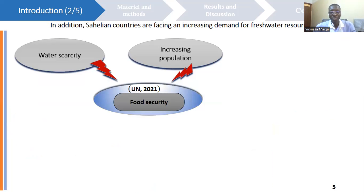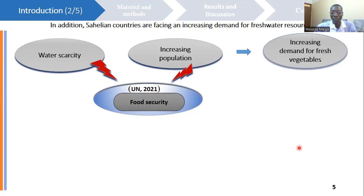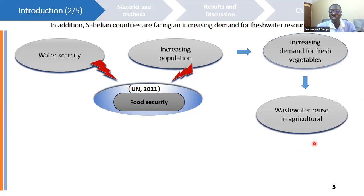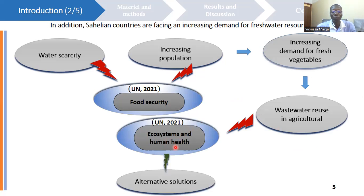In addition, Saharan countries are facing an increasing demand for freshwater resources because of water scarcity, and this has a negative impact on food security. Because of the increase in population, we are facing an increasing demand for freshwater for vegetables, and because of this, wastewater is used in agriculture with negative impact on ecosystem and human health. Therefore, it is necessary to find alternative solutions.